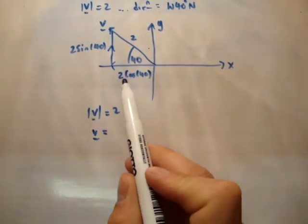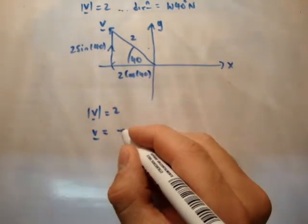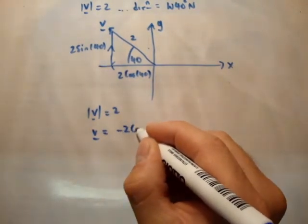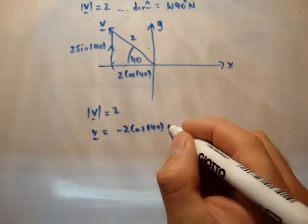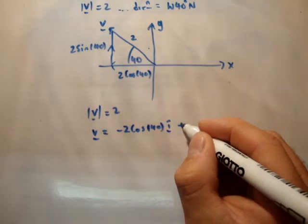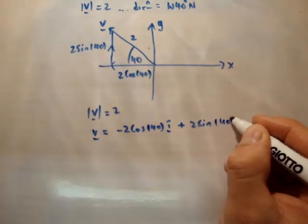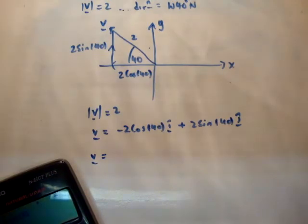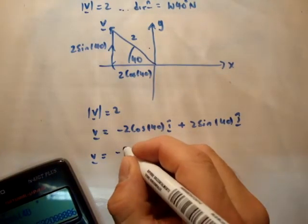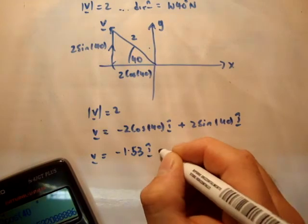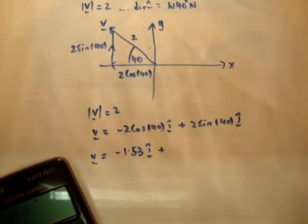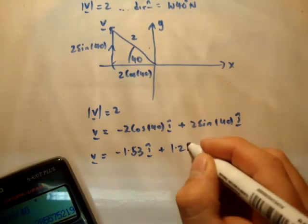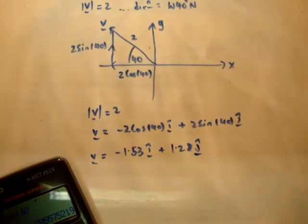So, we know the magnitude, if the i-hat is 2 cos 40, we know its direction is negative, so it's minus 2 cos 40 i-hat. And we know it's plus 2 sine 40 j-hat, like that. So therefore the vector v is equal to what? We plug it into our calculator, and we say 2 cos 40 is minus 1.53 i-hat, plus 2 sine 40, giving me 1.28 j-hat.